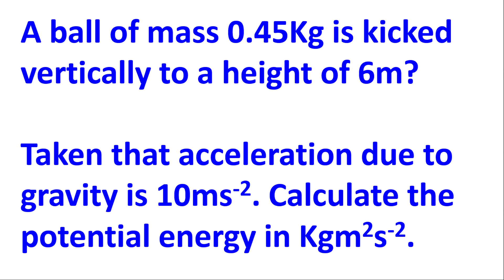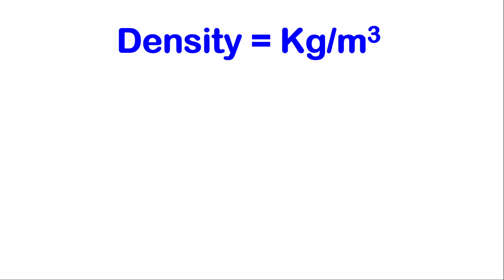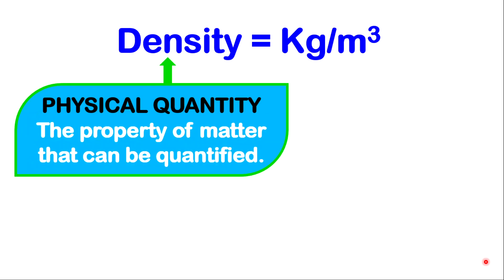I'm going to use density as my example. What do you understand by this? Density is equal to kilograms per meters cubed. The first thing that you should note is that density is a physical quantity. A physical quantity is the property of matter that can be quantified. So, for example, you may say what the value of density is, the amount of time, the amount of mass. And so we can attach values to quantity.